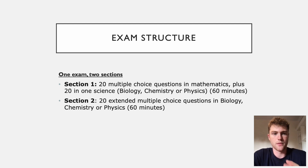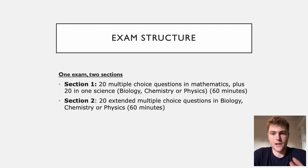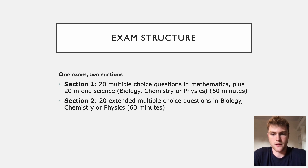It's one exam made up of two sections. The sections are given to you separately but you complete them immediately one after the other. Section one: you get 20 multiple choice questions in maths, which is compulsory, and then you choose a science — 20 more in biology, chemistry, or physics. You get an hour for this. Section two is 20 slightly harder questions in biology, chemistry, or physics, so again you get a choice. You get three minutes per question for section two.